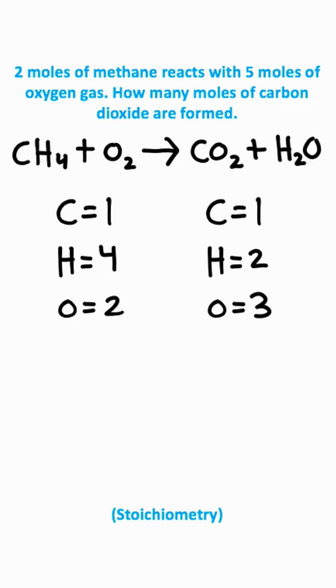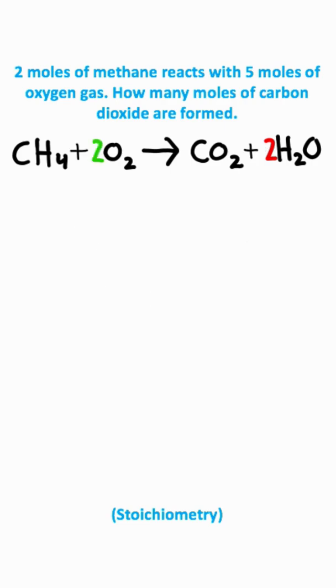So what I'm going to do is I'm going to put a two coefficient on the H2O. I have unbalanced oxygens, but what I'm now going to do is take a two and put it on O2. So we have a balanced equation now.